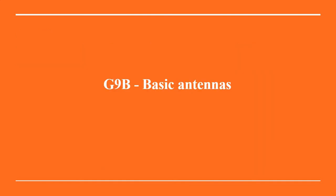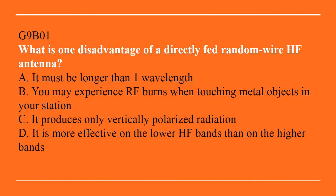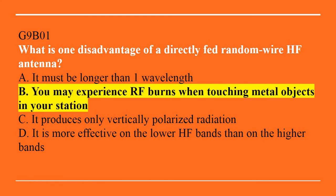G9B, basic antennas. G9B01: What is one disadvantage of a directly fed random wire HF antenna? A. It must be longer than one wavelength. B. You may experience RF burns when touching metal objects inside your station. C. It produces only vertically polarized radiation. Or D. It is more effective on the lower HF bands than on the higher bands. The answer is B — you may experience RF burns when touching metal objects in your station.